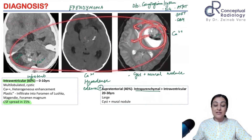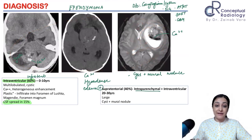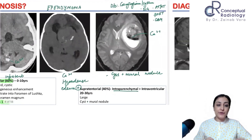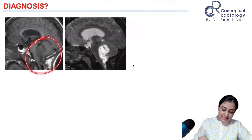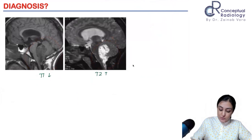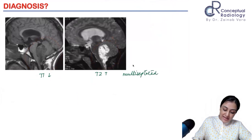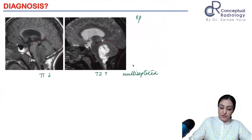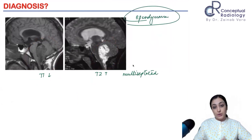Supratentorial ependymomas tend to be RELA-positive fusion ependymomas, with many other fusion ependymomas also occurring supratentorially. Here is another example showing a cystic lesion: on T1 it is hypointense, on T2 it is hyperintense with a multi-cystic, multi-septated appearance, and you can see how it is insinuating into the central canal — classic features of an ependymoma.